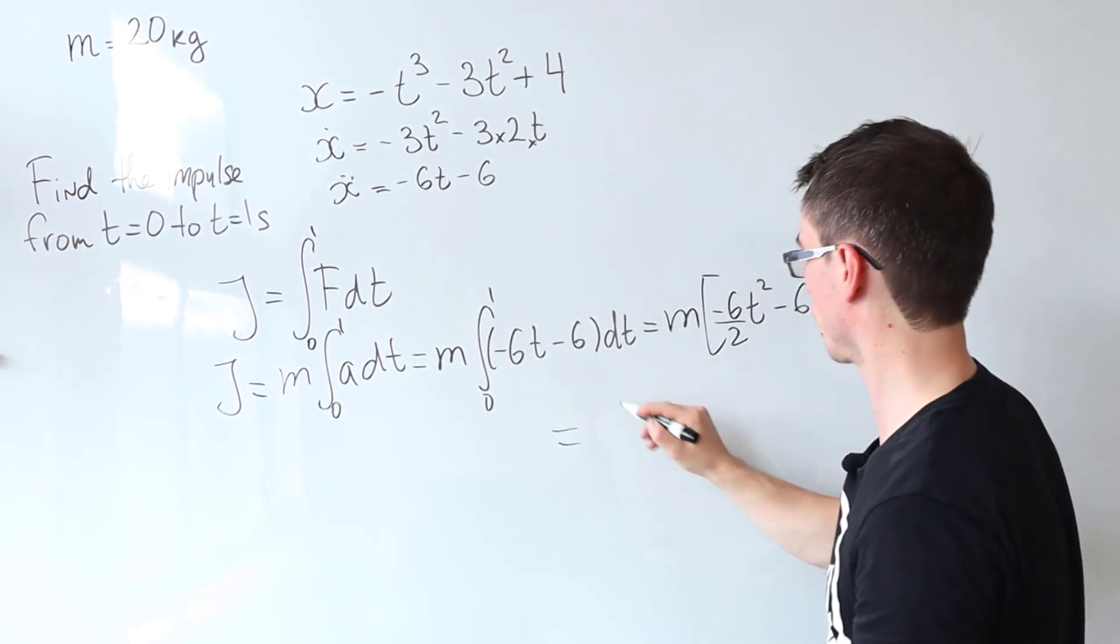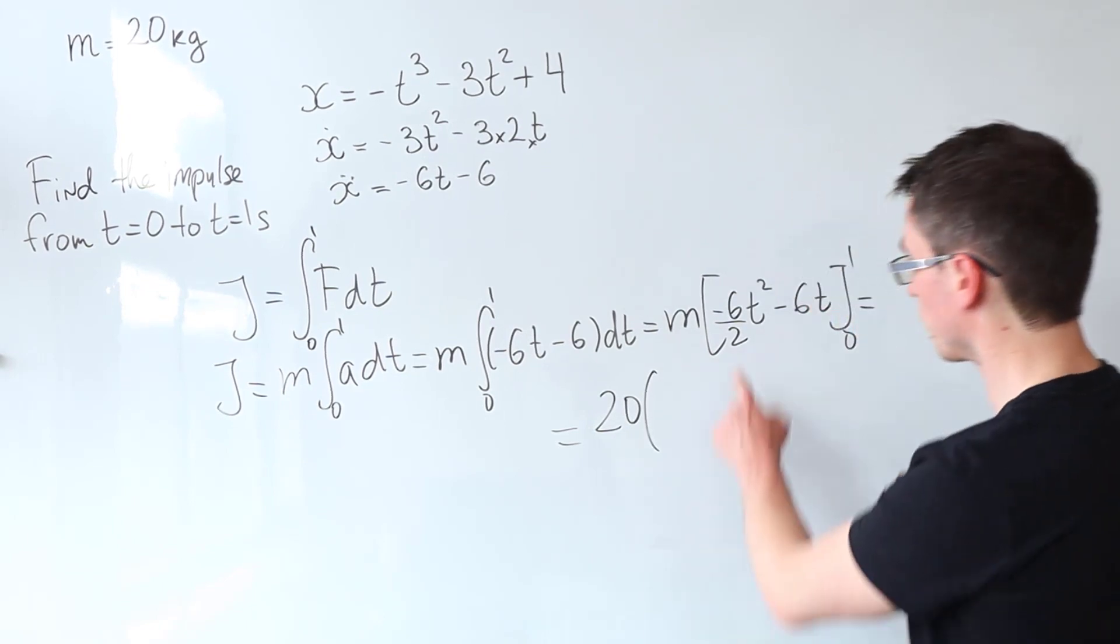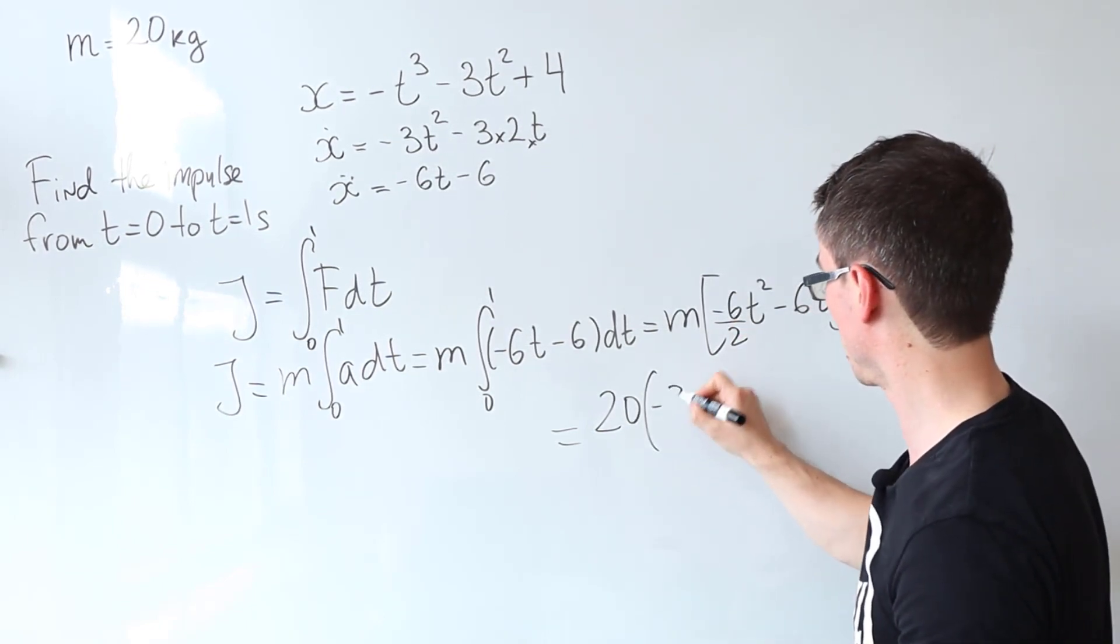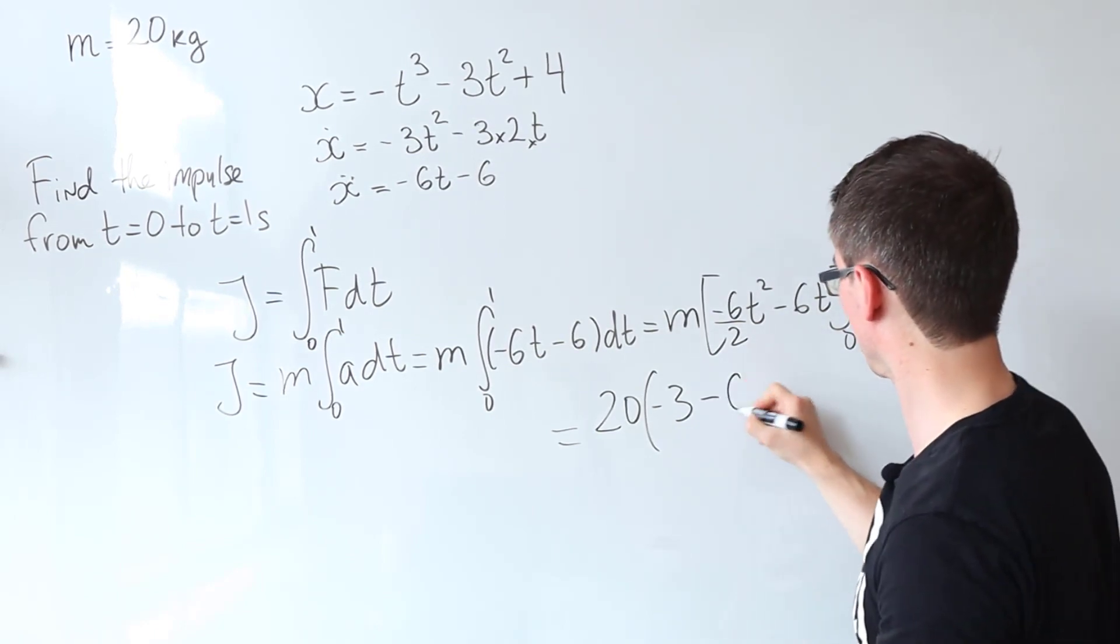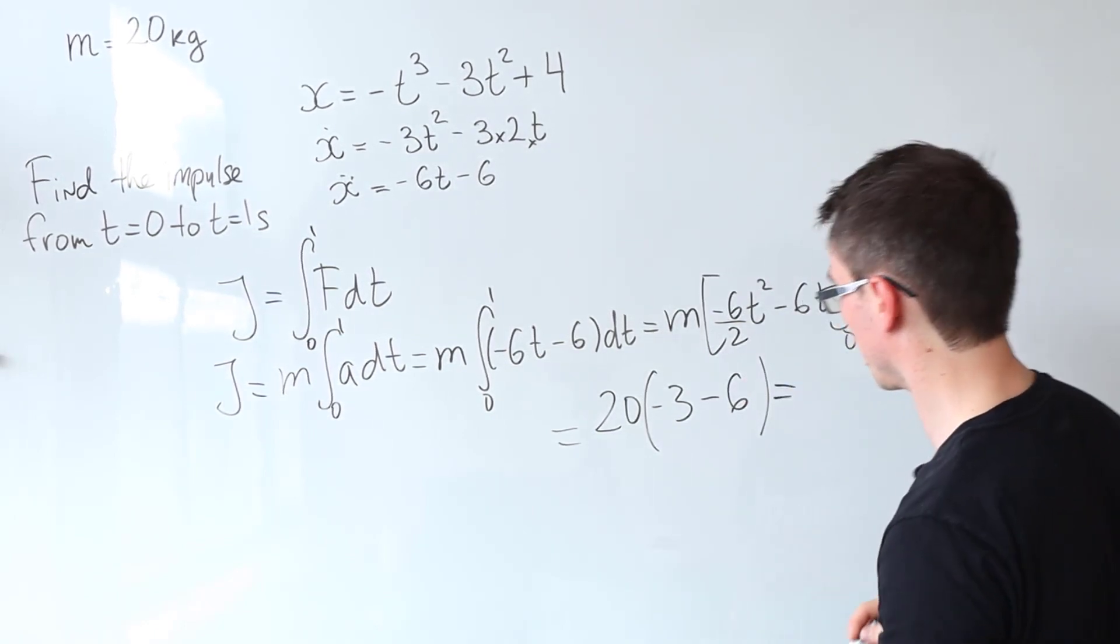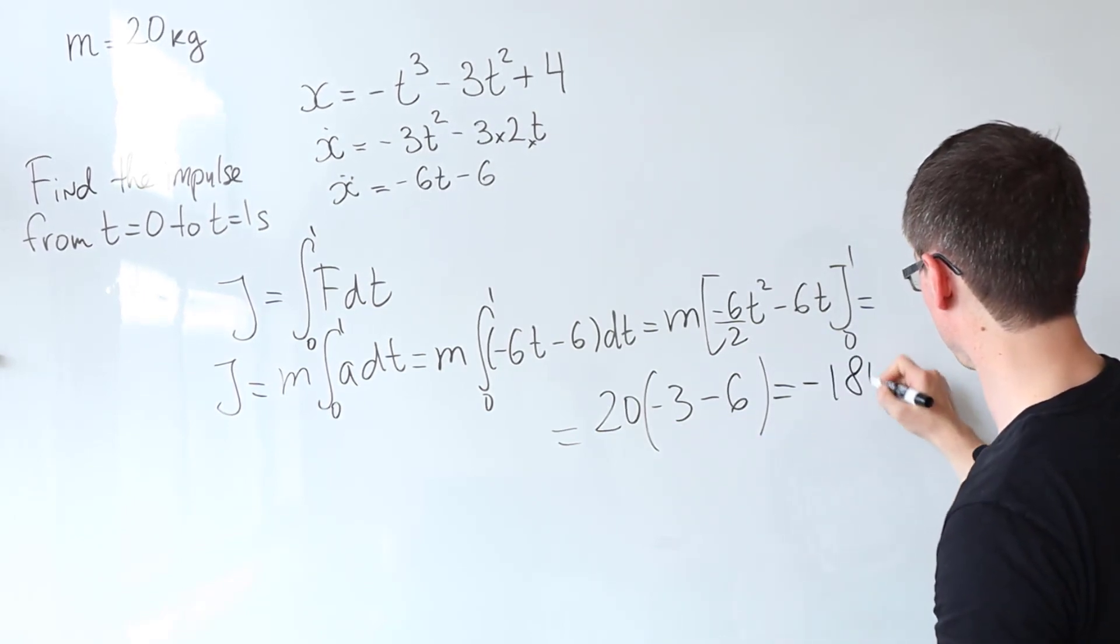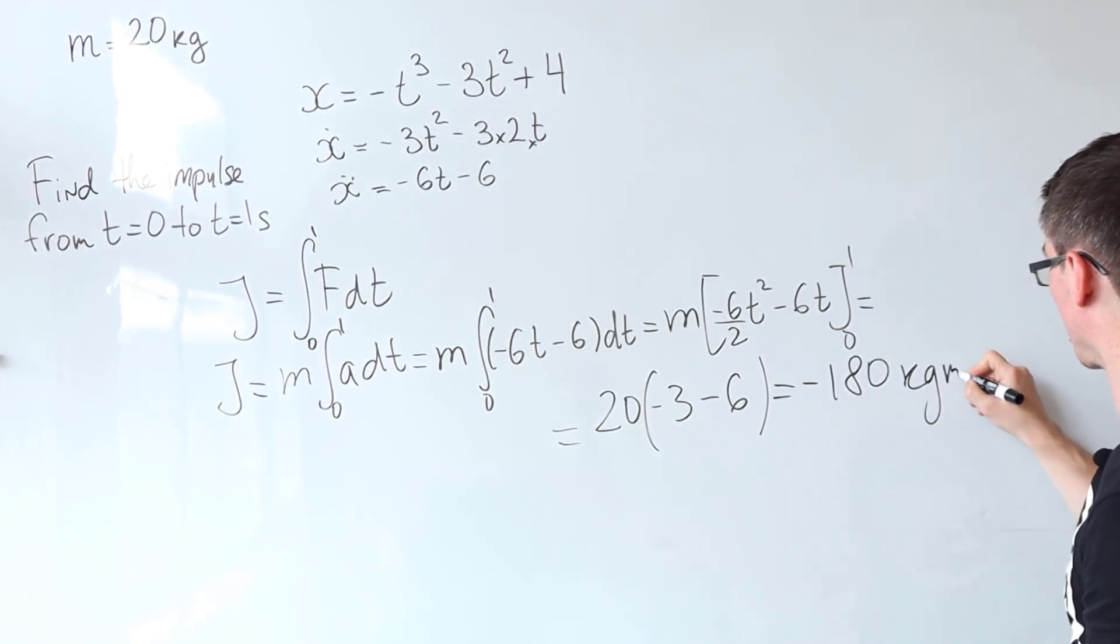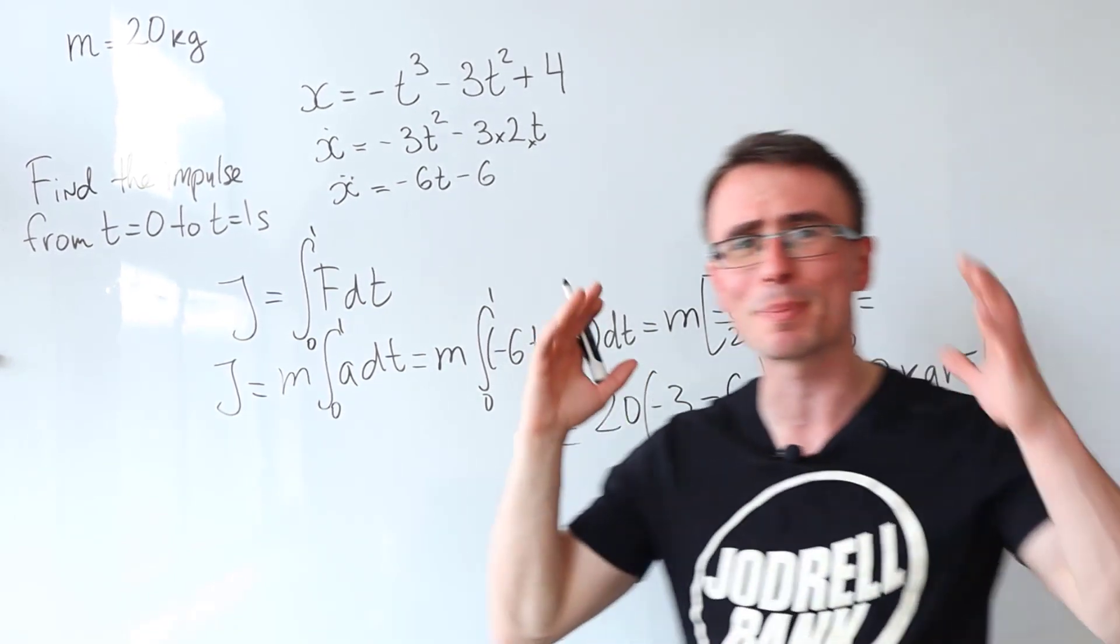So what will that give us? This will just be the mass is 20 kilograms and this will be multiplied by minus 3 and then take away minus 6. T equals 1. This is just equal to minus 9, so this will be 180 and the units will be kilograms meters per second. Magnitude is going to be 180.